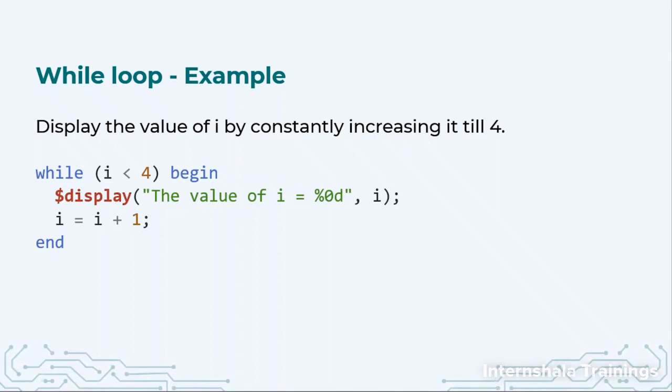In the next loop, 1 will be compared with 4. 1 is less than 4, fine, we come in the loop. It will display 1 and 1 will become 2. 2 is less than 4. It will display 2 and 2 will become 3.